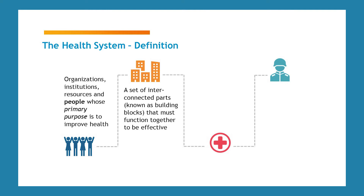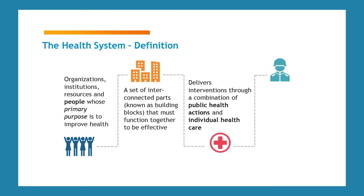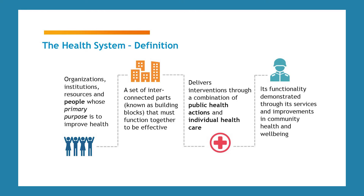The main purpose of a health system is to act to improve health. Health systems do this through delivery of promotive, preventative, curative, rehabilitative, and palliative interventions, which are a combination of public health or population-based health actions and personal healthcare or individual health services. The functionality and performance of health systems are demonstrated and can be monitored through its services and improvements in health and well-being, crucially, of communities.